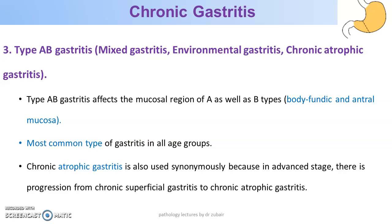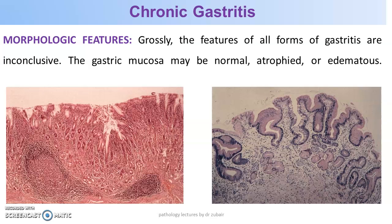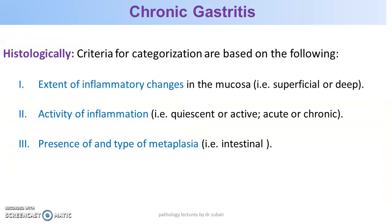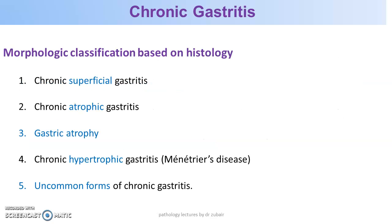Chronic atrophic gastritis is used synonymously in the advanced stage, with progression from chronic superficial gastritis to chronic atrophic gastritis. Morphologically, the mucosa can be normal, atrophic or edematous; grading includes regeneration, intestinal metaplasia, dysplasia, inflammation, and lymphoid follicles — all part of the Sydney classification of gastritis. Histologic criteria include extent of changes (superficial or deep), activity (quiescent or active, acute or chronic), and type of metaplasia. Forms include chronic superficial, chronic atrophic, gastric atrophy, chronic hypertrophic gastritis called Menetrier's disease, and uncommon forms.